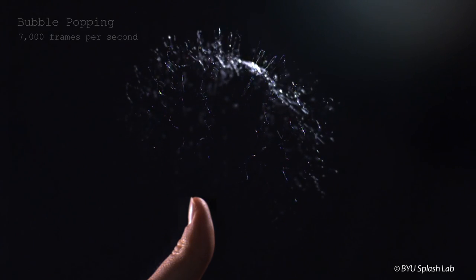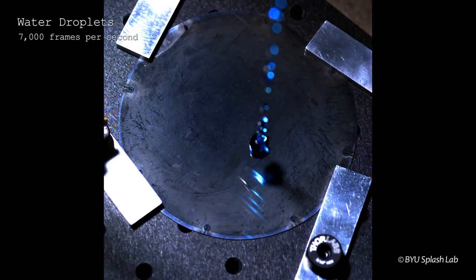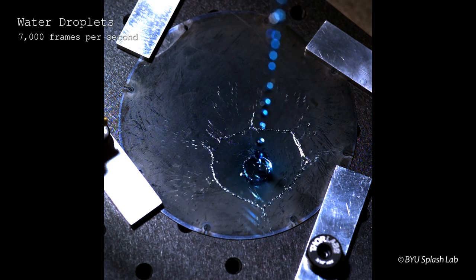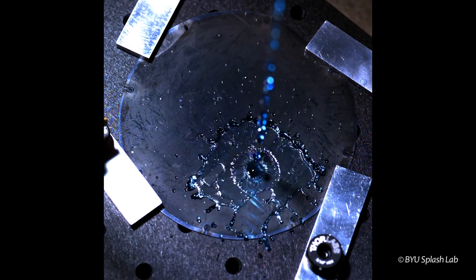We analyze super slow-mo images to get detailed information about how the fluids behave. When we look at images of these droplets we can see that they behave differently depending on the types of surfaces they land on.